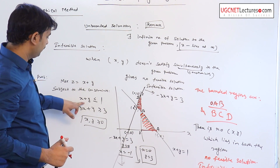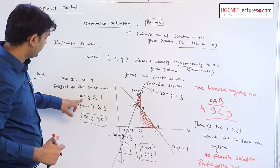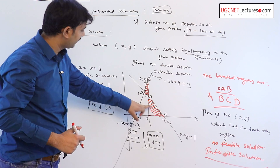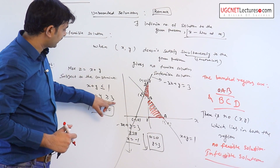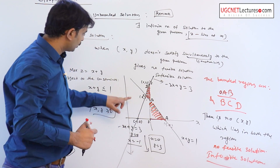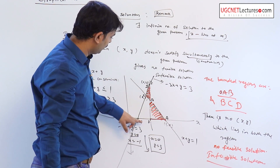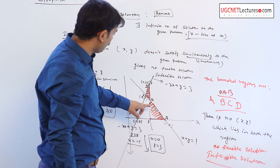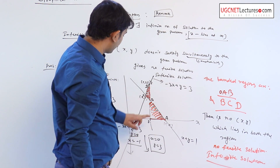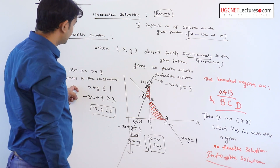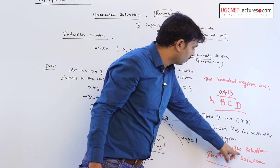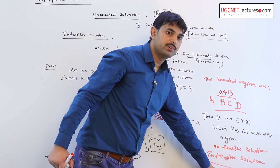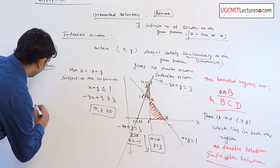To summarize what we have done using the graphical method: x plus y less than or equal to 1 means the region below that line, and minus 3x plus y greater than or equal to 3 means the region above that line. The feasible regions are O, A, B and B, C, D respectively, but there is no x, y which simultaneously satisfies both constraints. This means the problem gives no feasible solution — it gives an infeasible solution.